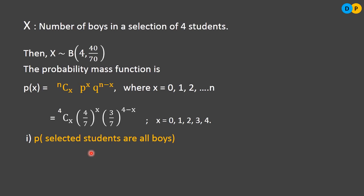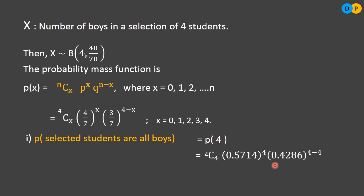For the first question, we need to find the probability that all selected students are boys, i.e., P(X = 4). Substituting x = 4: 4C4 × (0.5714)^4 × (0.4286)^0. The answer is 0.1066.